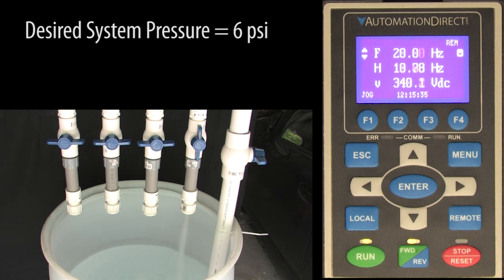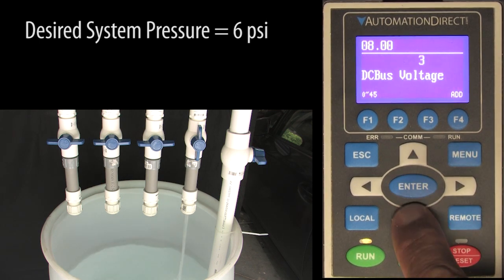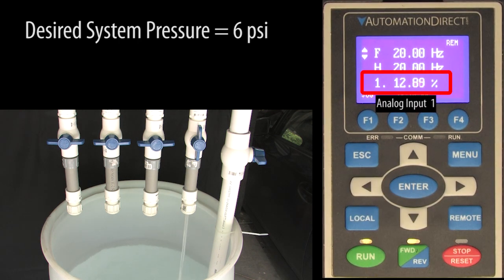We can monitor the feedback signal on analog input 1 right on the main display using parameter 8.0 and setting it to an 11. That shows us the sensor signal as a percentage.